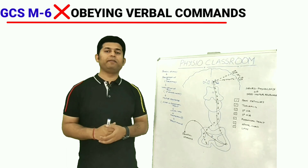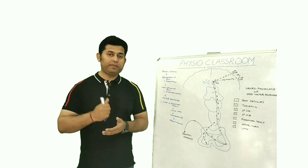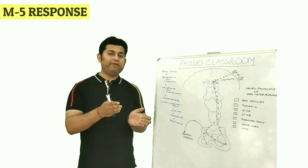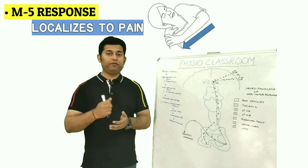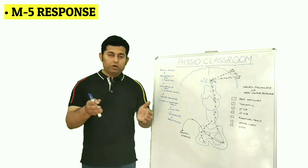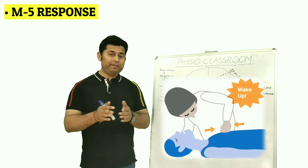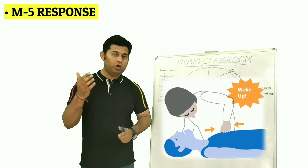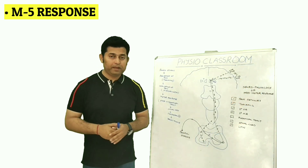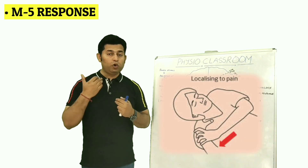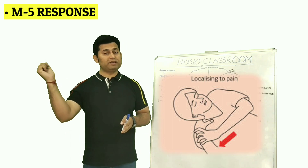The M5 motor response is localization of painful stimuli. The most common way of checking the M5 motor response is to give a deep painful stimulus using the knuckles over the sternal bone. In response to this painful stimulus, the patient is able to localize the site of pain and can even remove that stimulus using the hand.